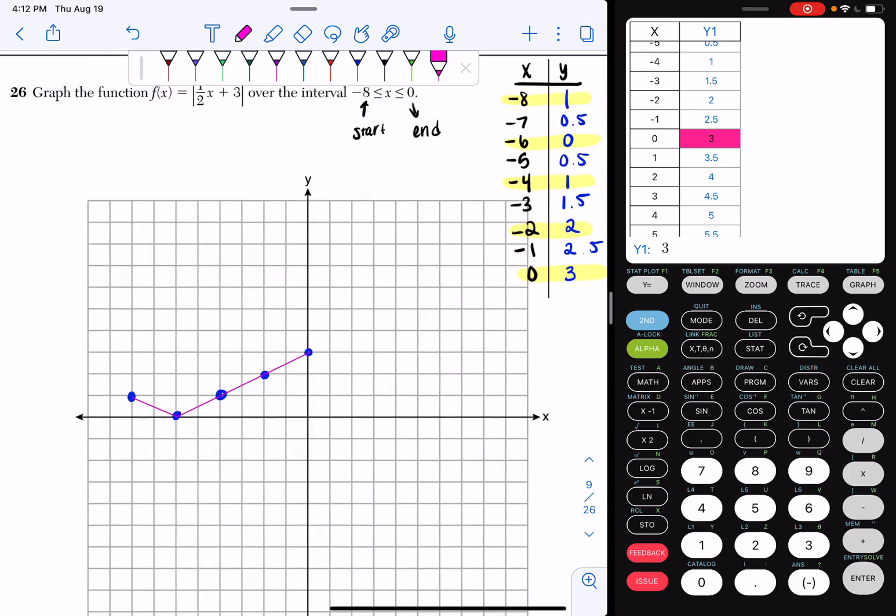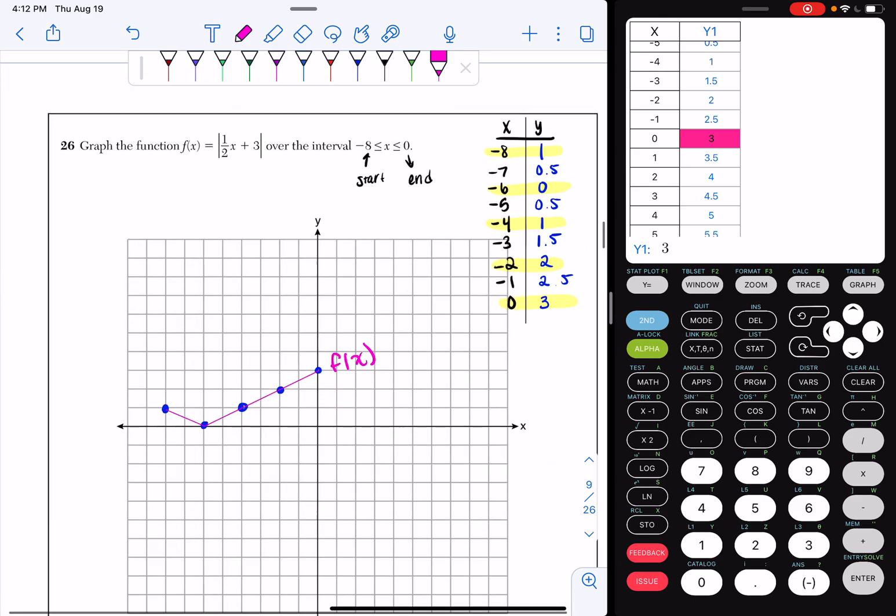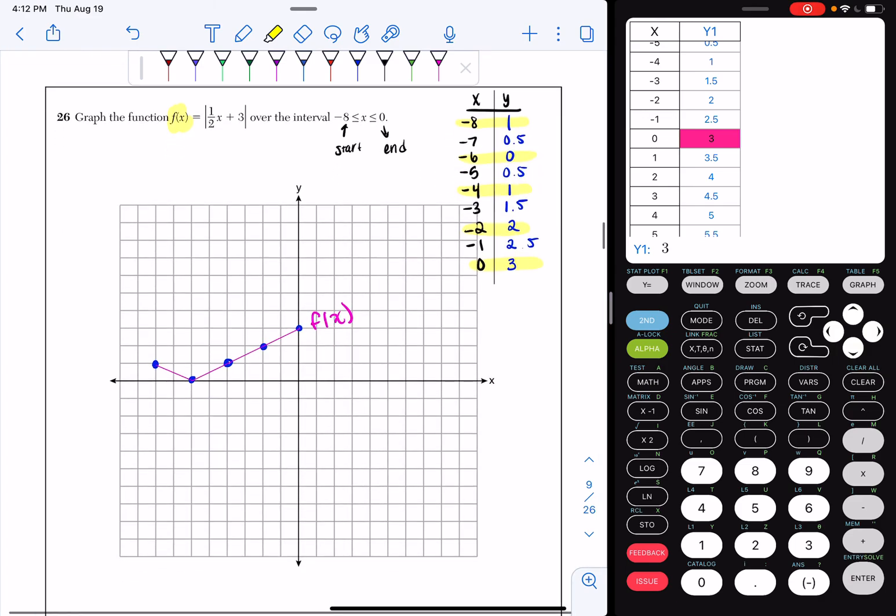And if you want to, you can be nice and fancy and write down f of x because that's the name of your graph from up here. And that's how you get two points for question number 26.